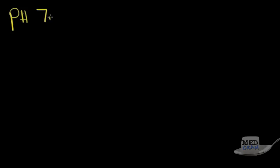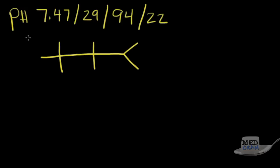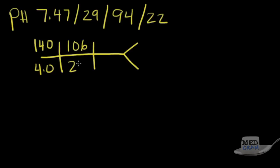Let's go ahead with our first question. Someone gives you a blood gas and the pH is 7.47/29/94, and the bicarb is 22. The CHEM7 is: sodium 140, potassium 4.0, chloride 106, and bicarb 22. The very first step you need to do is calculate the anion gap. This is always going to be the first step.